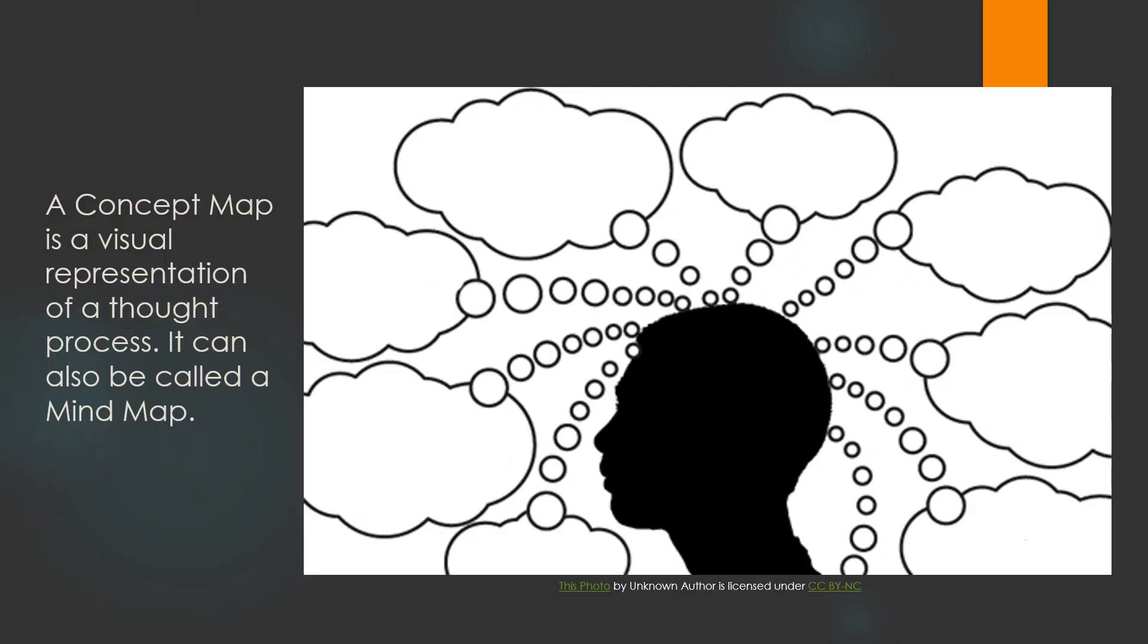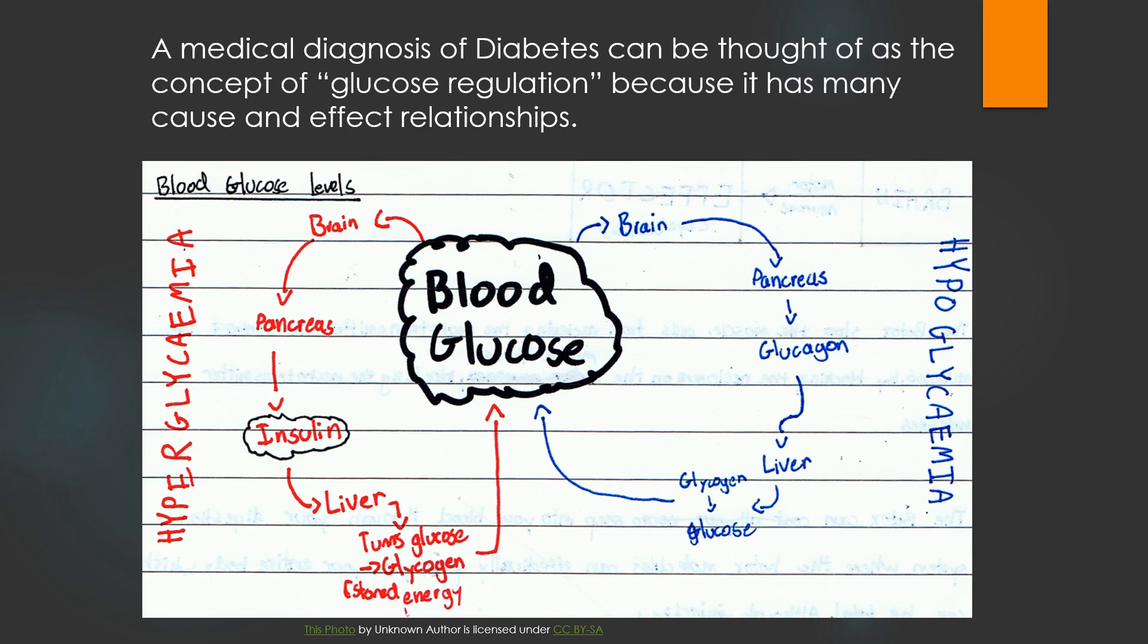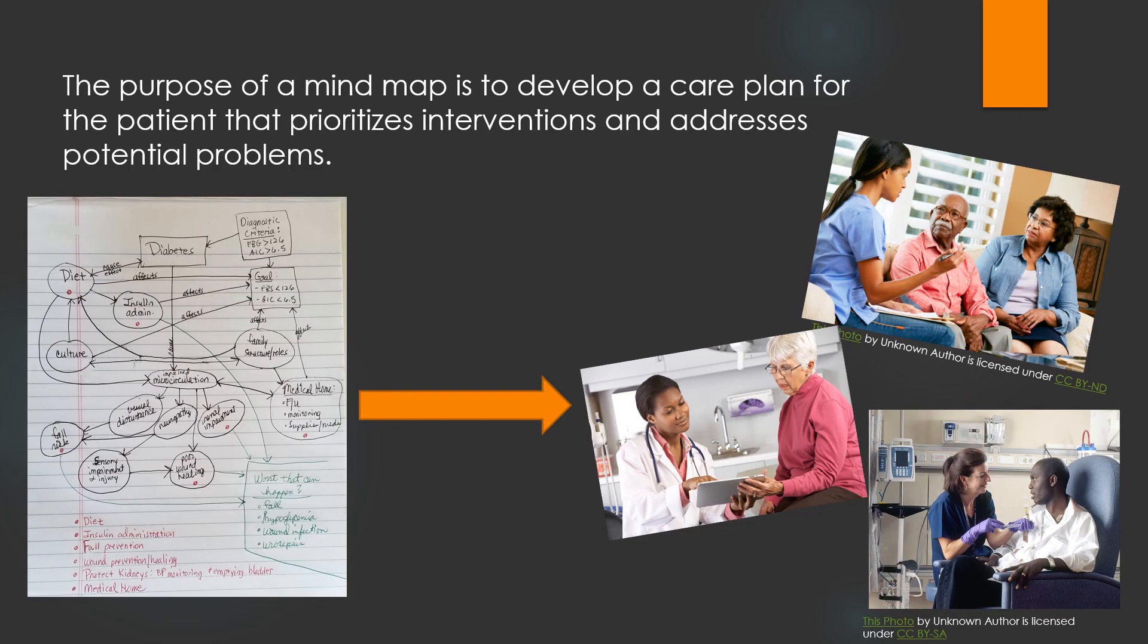Remember, a concept map is a visual representation of a thought process. That's why it can also be called a mind map. It is reflective of how a nurse thinks. A medical diagnosis of diabetes can be thought of as the concept of glucose regulation because it has many cause-and-effect relationships. The purpose of a mind map is to develop a care plan for the patient that prioritizes interventions and addresses potential problems.